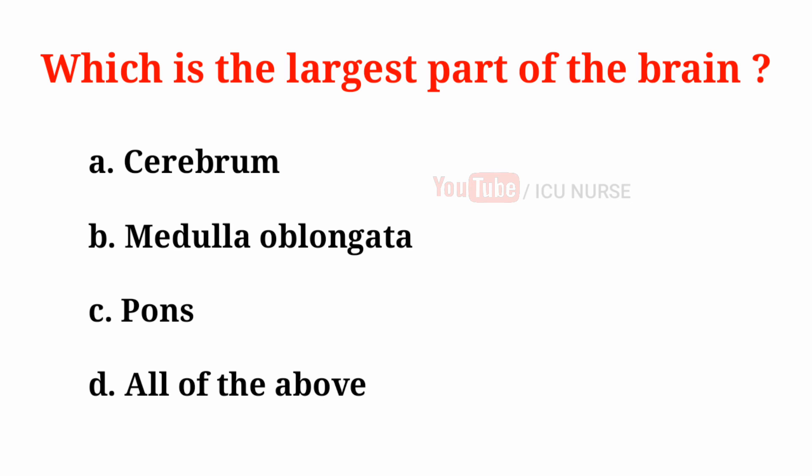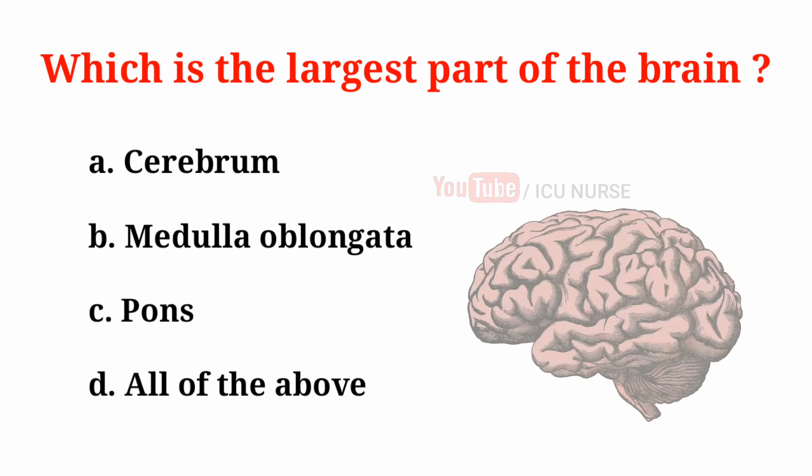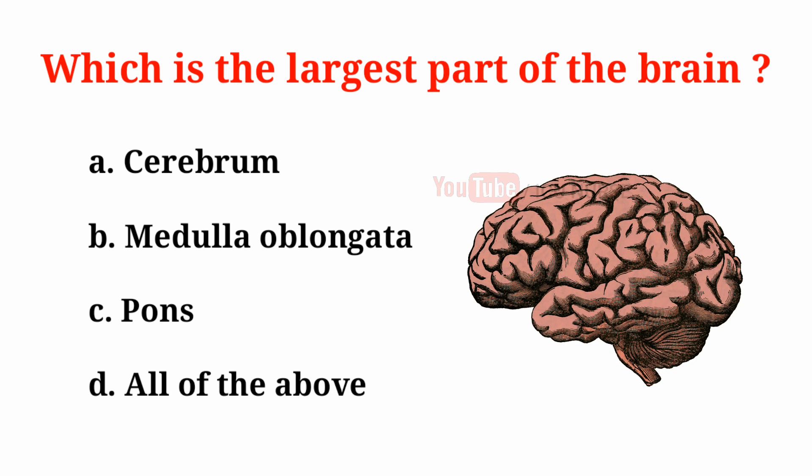Which is the largest part of the brain? A. Cerebrum, B. Medulla oblongata, C. Pons, D. All of the above.